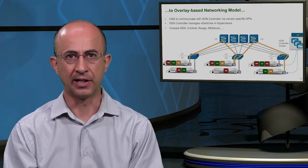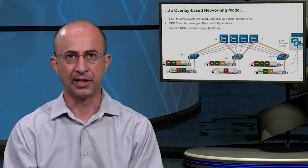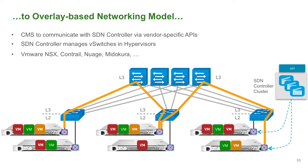Once the physical layout is defined, it's time to provision network connectivity needs. In a traditional data center, traffic isolation requirements were satisfied using VLAN-based segmentation. VLANs were used to tag traffic end-to-end among all racks involved in traffic exchange. This type of provisioning was manually intensive, frequently requiring configuration changes on a large number of network devices like switches and routers.